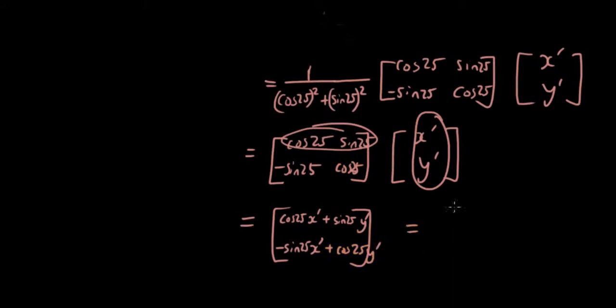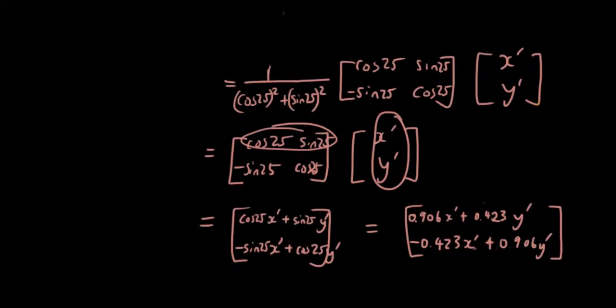Okay, and let's type cos 25 and sin 25 into the calculator, and you will get cos 25 is equal to 0.906, sin 25 is equal to 0.423. So after we have done all of this, we can now say that: